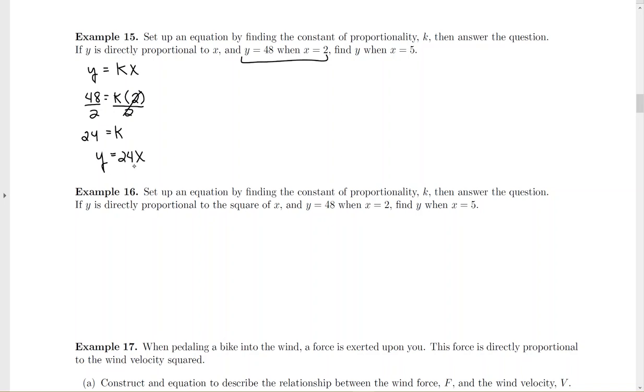Then plug the K back into your original equation. And then that's the equation that you're going to use to answer this last piece here. Find Y. So we're going to use our 24 when x is 5. So when you multiply that out, you come up with 120. There's no unit labels on it, so it's just the number 120.